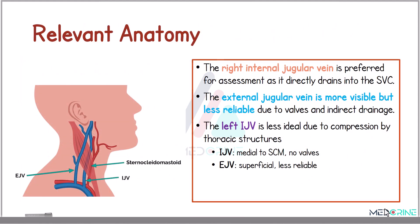An understanding of neck venous anatomy is key to JVP assessment. The right internal jugular vein is ideal as it drains directly into the superior vena cava without intervening valves. In contrast, the external jugular vein, although more visible, is less reliable due to its indirect drainage and the presence of valves.